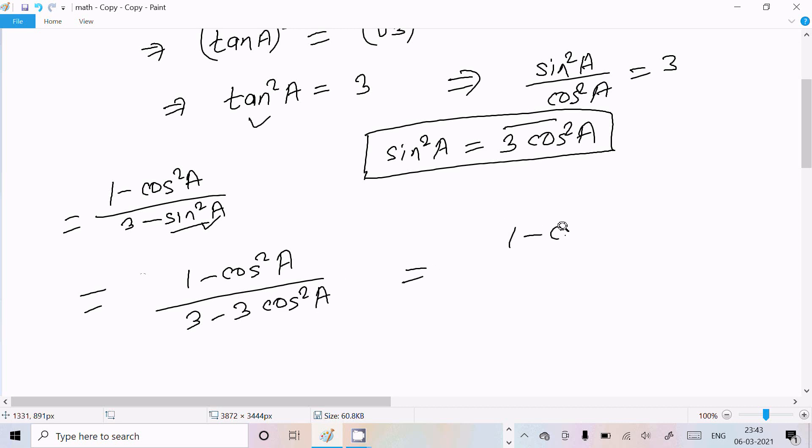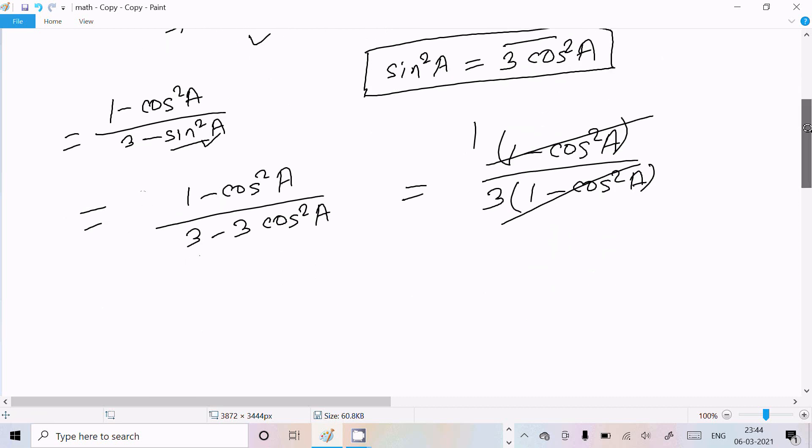Now it's (1 - cos²A) / (3 - 3cos²A). Factoring out 3 from the denominator gives 3(1 - cos²A). The numerator and denominator cancel.